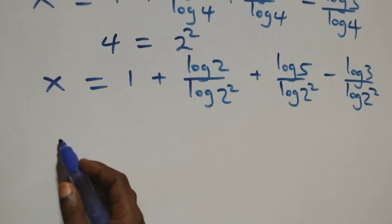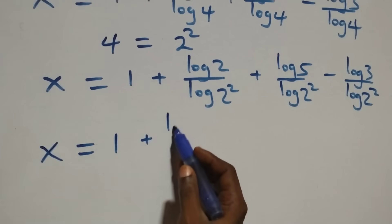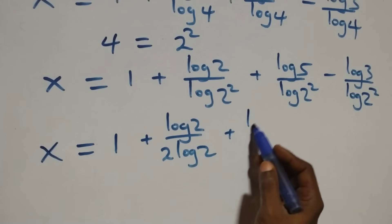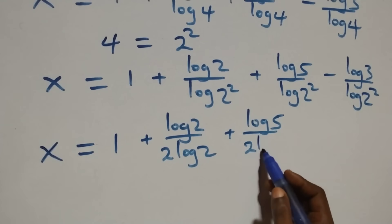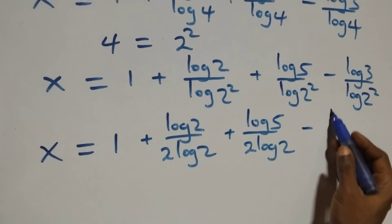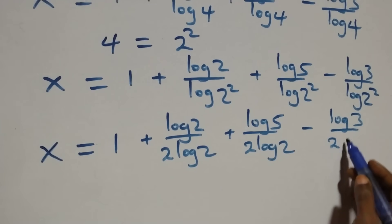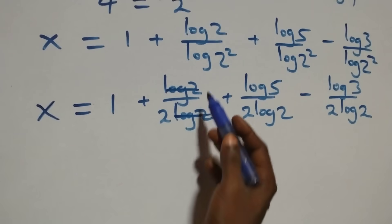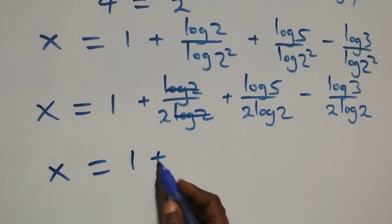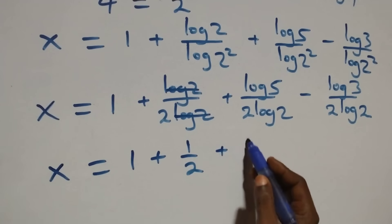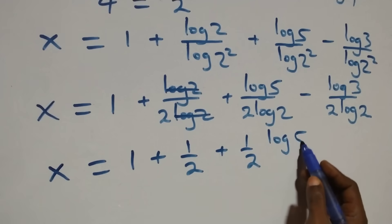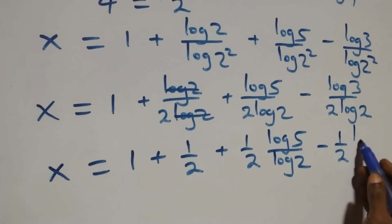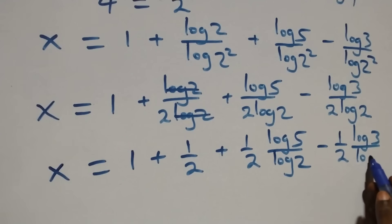Also here, from here, we have x equals to 1 plus log 2 over 2 log 2 plus log 5 over 2 log 2 minus log 3 over 2 log 2. Then from here, log 2 cancelled each other and all we have becomes x equals to 1 plus 1 over 2, then plus 1 over 2 times log 5 over log 2, then minus 1 over 2 times log 3 over log 2.